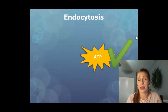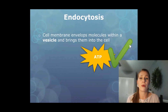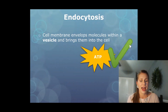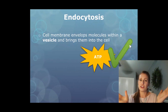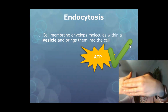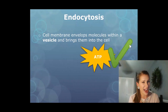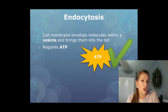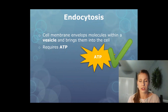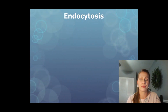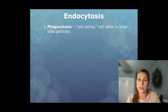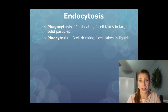Endocytosis is another example of active transport, where the cell membrane envelops molecules within a vesicle and brings them into the cell. It's kind of like the cell membrane reaching out for something it wants, putting its arms around it, and dragging it into the cell — engulfing it. Endo means within, so endocytosis means bringing something within the cell. This requires ATP and is active transport. Two types of endocytosis include phagocytosis and pinocytosis.